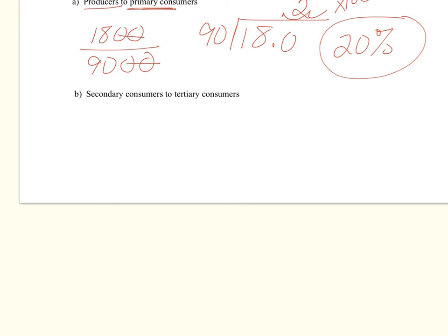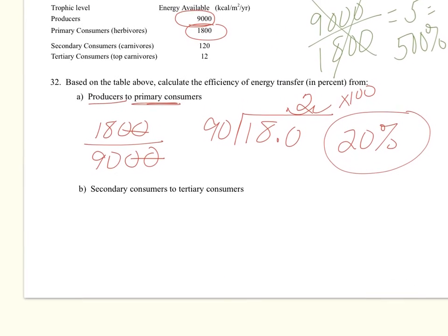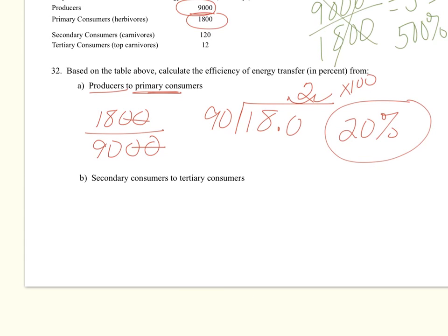Okay, and then secondary consumers to tertiary consumers. So secondary consumer is 120 and then 12. So it's going to be 12 divided by 120. And we can just reduce this. We know that this is a tenth. So you can kind of look at it and you can see that.